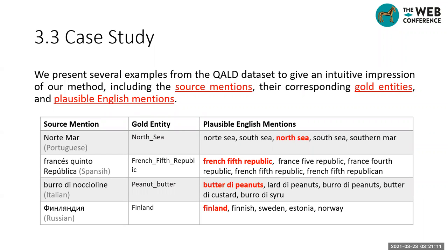We present several examples from the QALD dataset to give an intuitive impression of our method, including source mentions, their entities, and plausible English mentions. The highlighted mentions are the important plausible mentions used to recall the correct entity labeled by a human annotator.